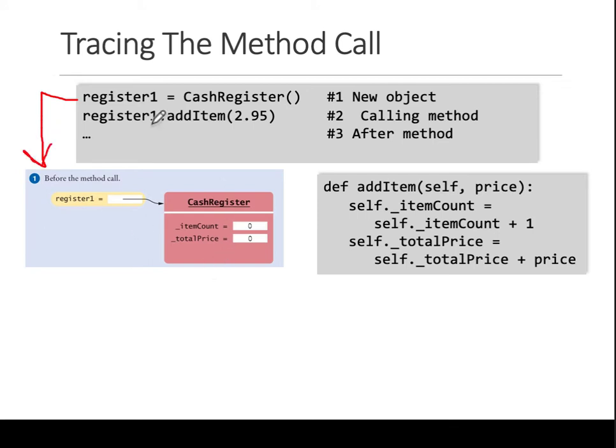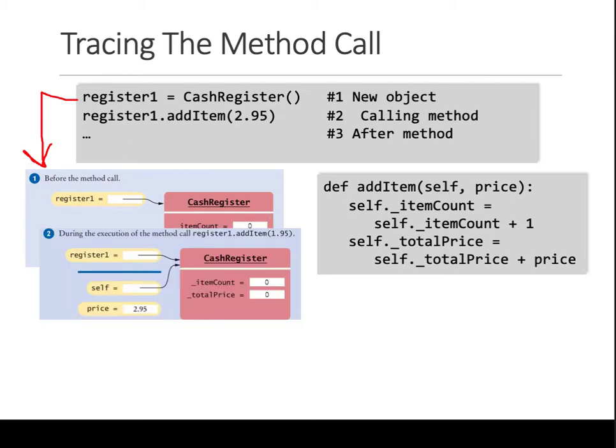What happens is when you create, so this first line creates this: register1 equals - so this space in memory gets introduced which is a CashRegister. What's the constructor of the CashRegister? It's setting these two variables to be zero. What happens in the next line?